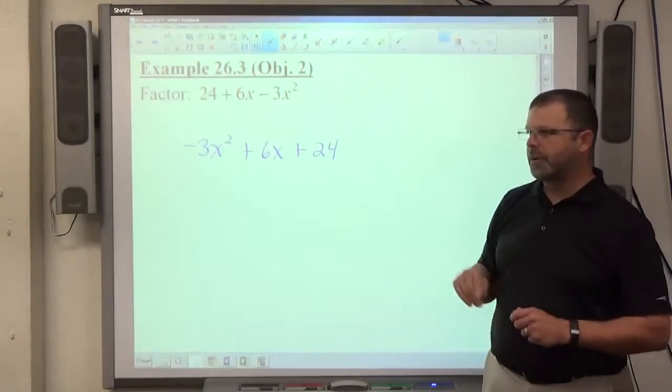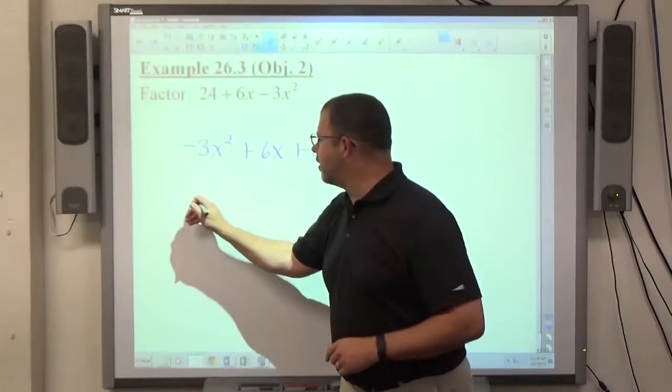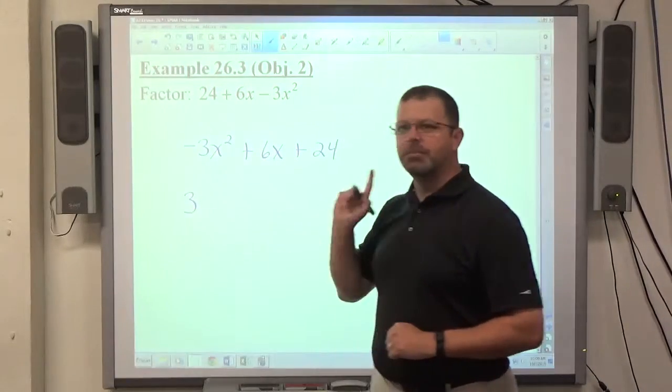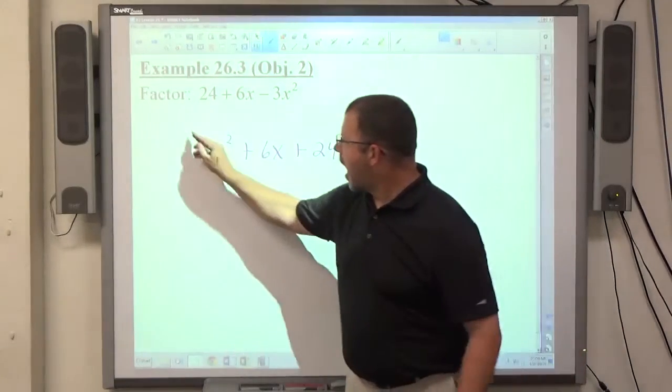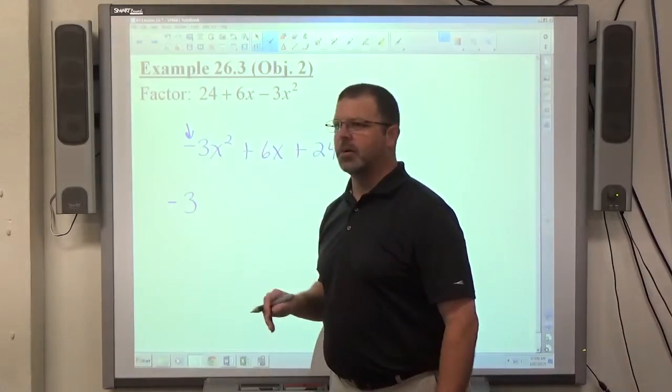Does 3 divide into 6 and 24 evenly? Yes, that makes it a greatest common factor. So 3 is the greatest common factor of these three objects, but I don't want my lead term to be negative, so I'm going to extract a negative common factor here.